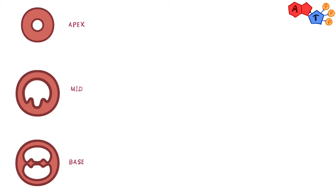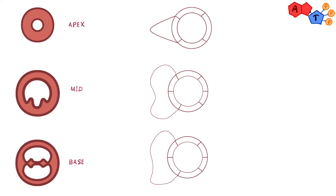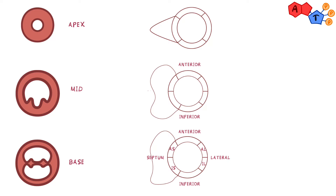We can divide the base of the left ventricle into six segments. First we have the septum, then the lateral wall — up top is anterior, below is inferior. The septum is divided into anterior septum and inferior septum, and the lateral wall is similarly divided into anterior lateral and inferior lateral. The mid-level has a similar segmentation, with anterior and inferior segments, and the septum again divided into anterior septum and inferior septum, and the lateral wall into anterior lateral and inferior lateral.